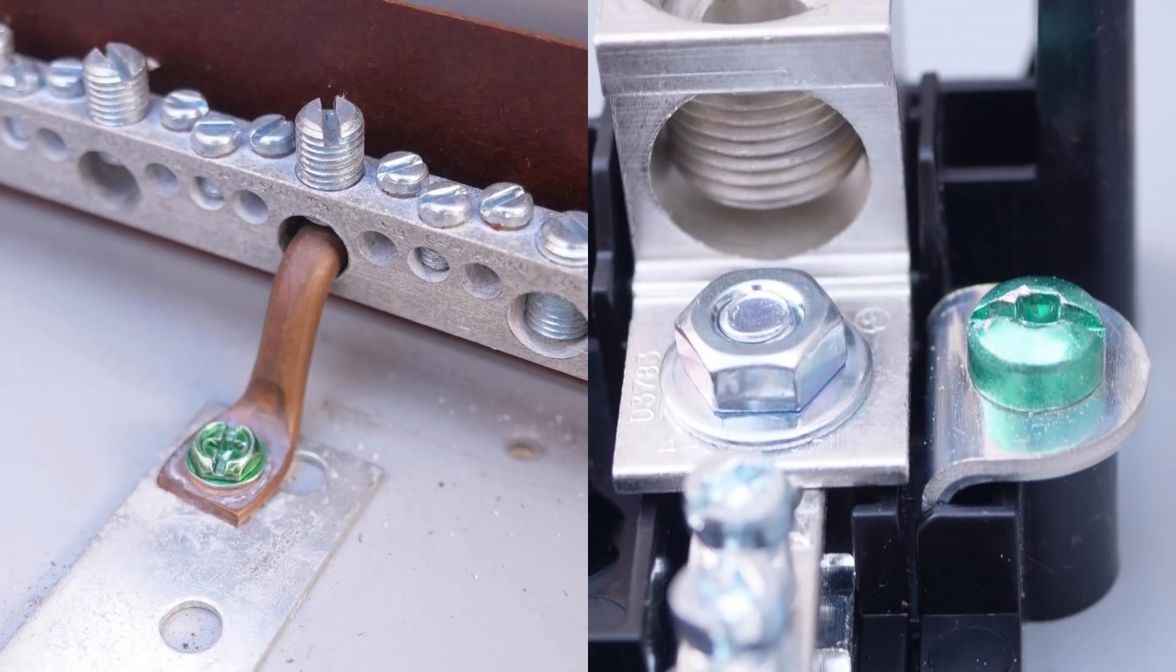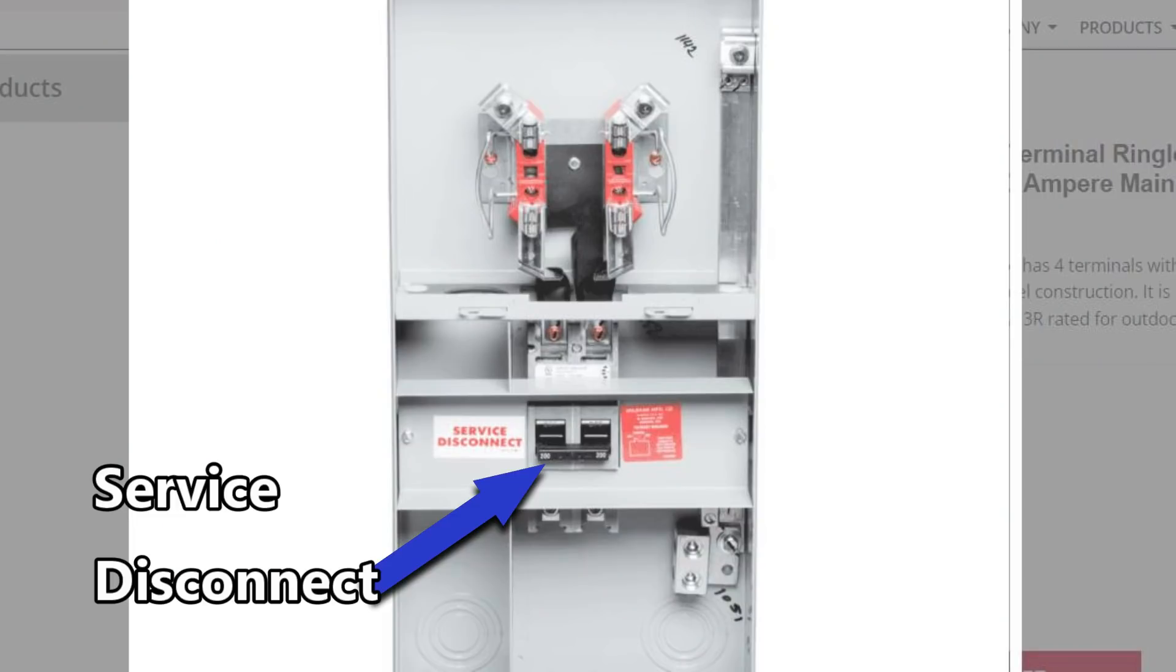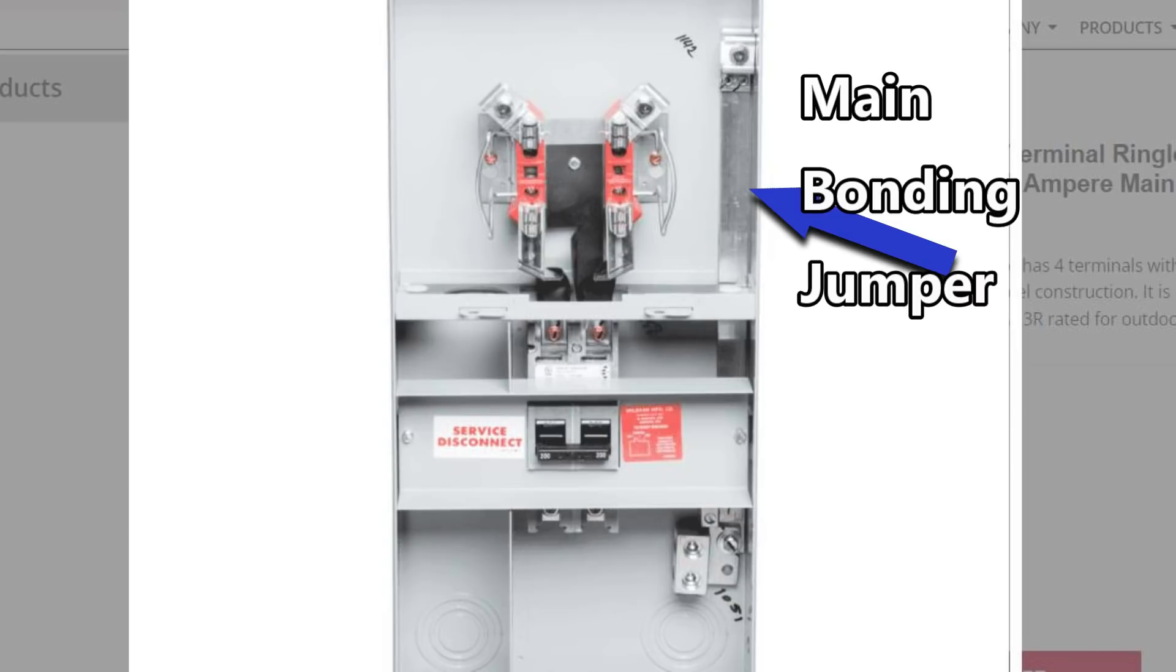When these bonding devices are properly used, they are called main bonding jumpers. Here's a meter socket enclosure with a service disconnect, and here is another example of a main bonding jumper. It comes built in. It connects the neutral lug to the equipment grounding conductor.